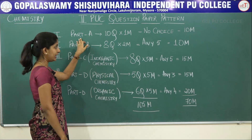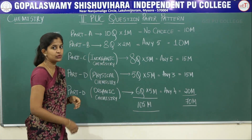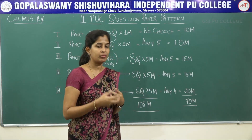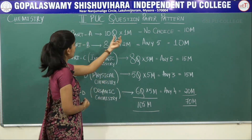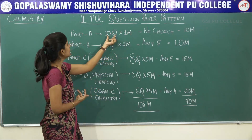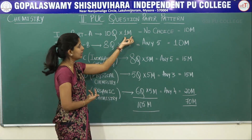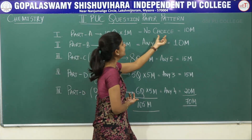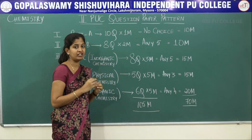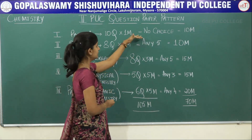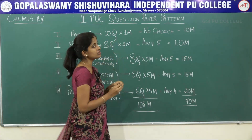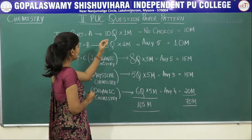The first main is Part A. Part A comprises questions from all three branches — organic, inorganic, as well as physical chemistry. Part A consists of one-mark questions from all three branches. There will be 10 questions, each carrying one mark, and there is no choice. The total weightage of the first main is 10 marks. This section is very important for scoring full marks since you must attempt all questions with no choice.